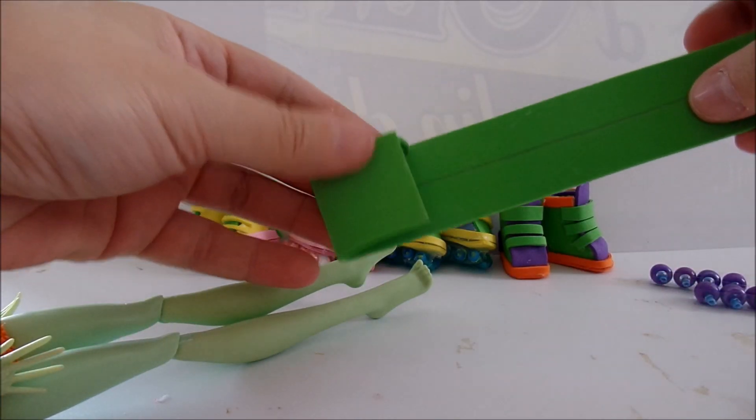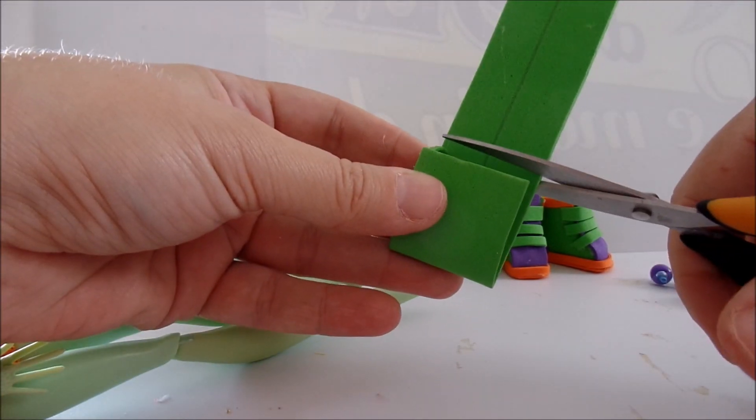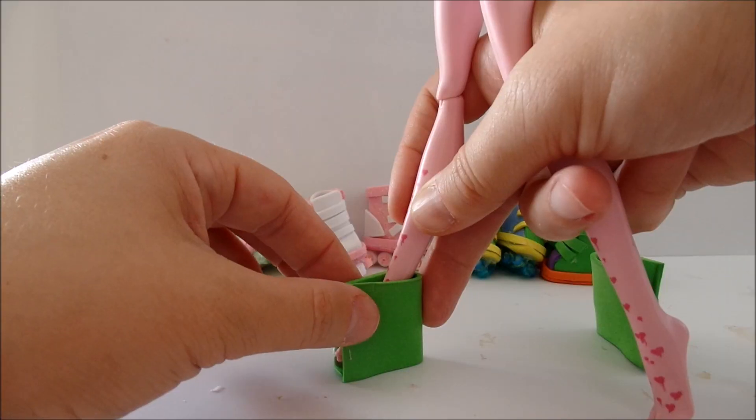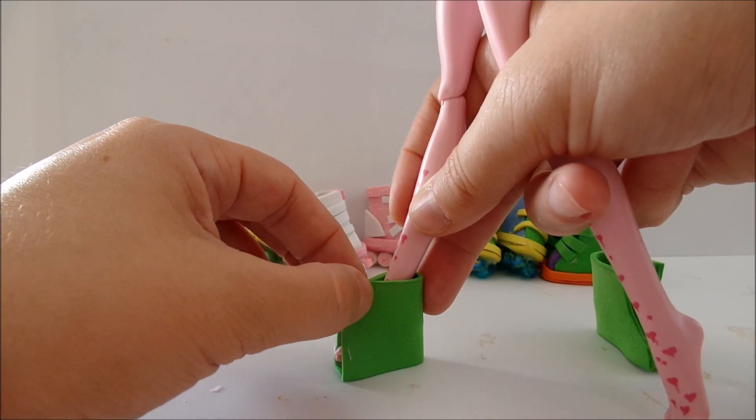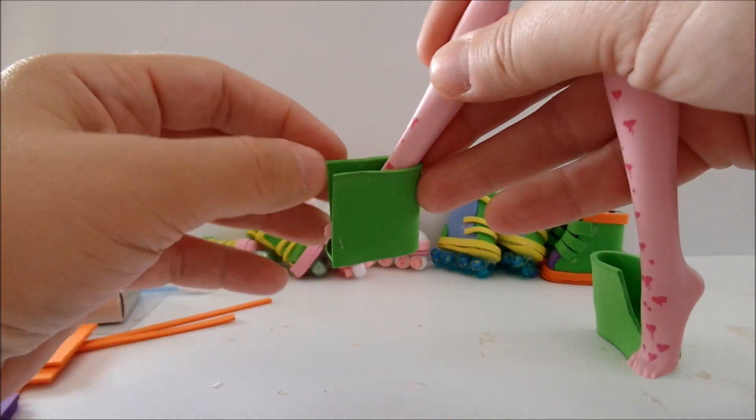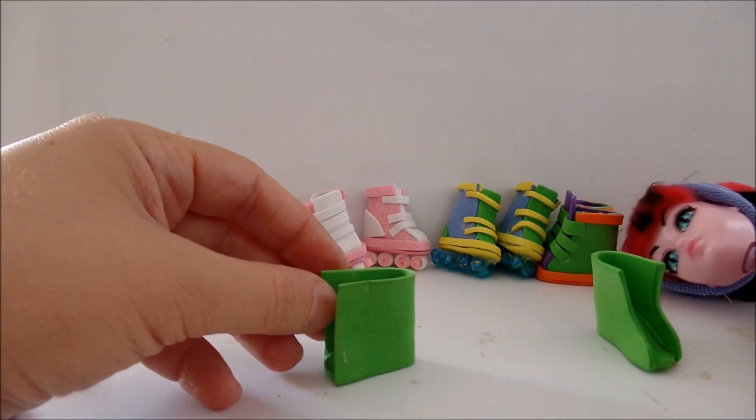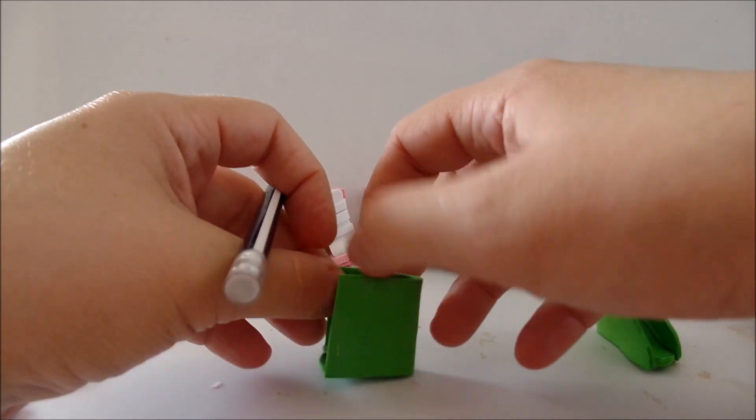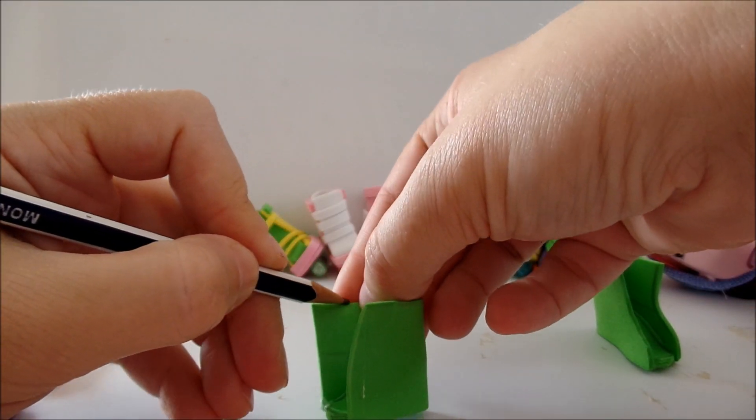Once the glue is solid, trim off the excess. Hold together both parts of the shoe. If this is where you will start cutting, mark it.